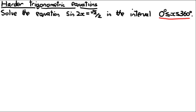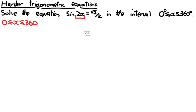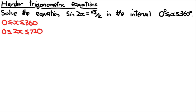The interval is 0 to 360 with respect to x, but we want to make this with respect to whatever is inside the trigonometric function, which is 2x in this instance. The key is adjusting the interval to whatever is in the function. In this case we've multiplied x by 2, so we multiply all the numbers by 2: 0 times 2 is 0, and 360 times 2 is 720. Now we solve the problem as normal with this extended interval, drawing the graph over this extended interval.